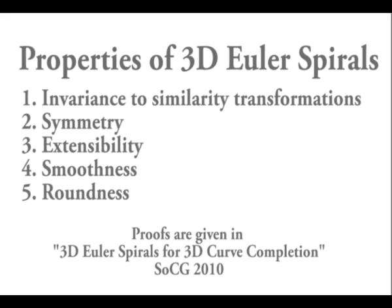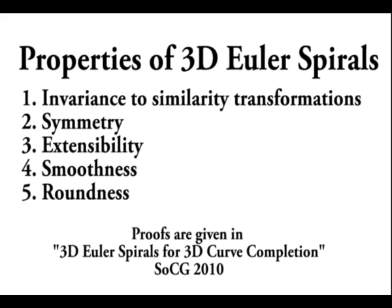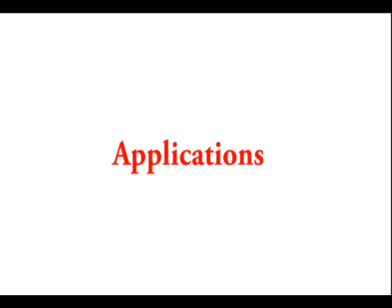The paper proves that the suggested curve satisfies some desirable properties — properties that have been claimed to produce eye-pleasing curves. In particular, we prove that our curves are invariant to translation, rotation, and scale, and that they are extensible, smooth, and round. We apply 3D Euler spirals to a couple of applications.